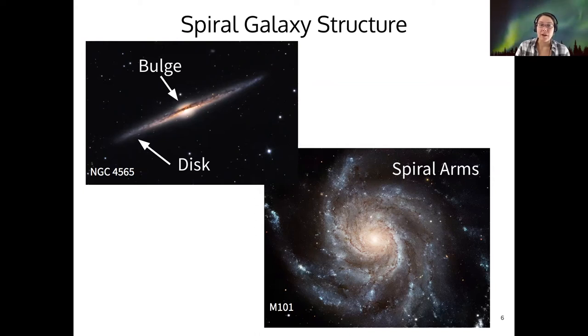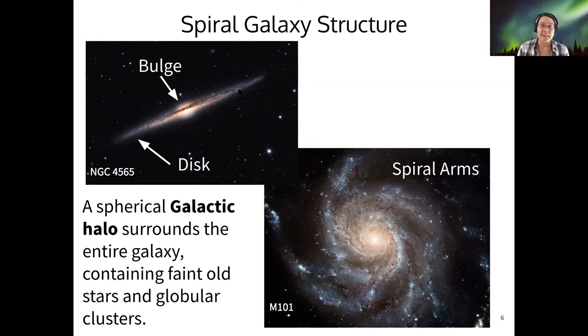Elliptical galaxies are not confined to a flat disk, so it makes them completely different. And something that you don't see in these types of images of spiral galaxies is the halo. So there's a spherical halo that surrounds the entire galaxy. It contains old stars and globular clusters. Both of those are very faint features, and so that's why it doesn't show up well in visible wavelength images of other spirals.